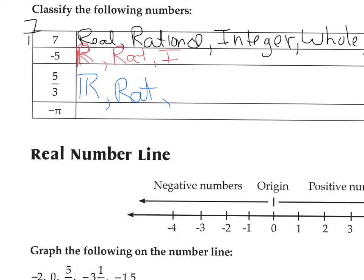Let's talk about negative pi. It is a real number — it does have a place on the number line. Is it a rational number — can it be written as a fraction? Or is it irrational — a non-terminating, non-repeating decimal? This is actually the only irrational number on the list. So we call it irrational. There are no smaller sets under irrational, so once you've classified a number as irrational, you're done.